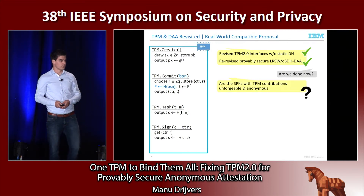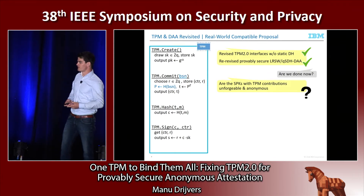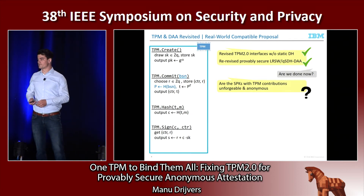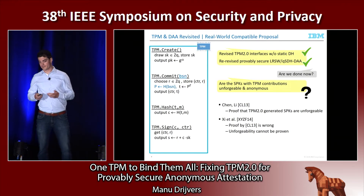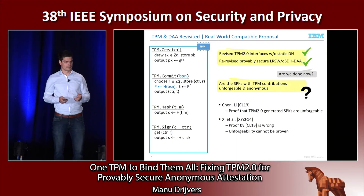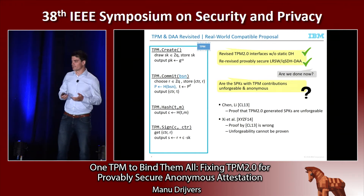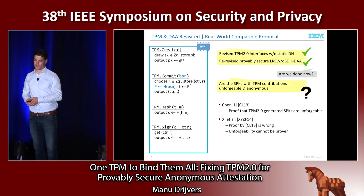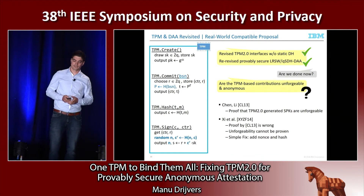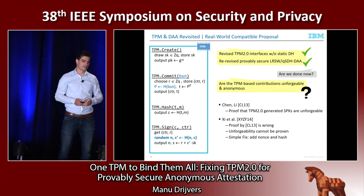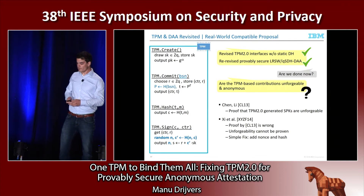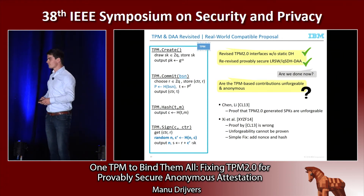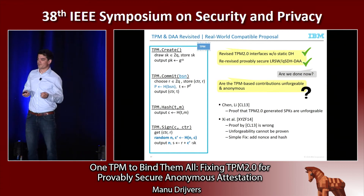Now we're wondering whether we're done — do we have unforgeability and anonymity? Turns out we don't. When these interfaces were announced, there was a proof that they would guarantee the unforgeability we want. But unfortunately there's a flaw in that proof, and this unforgeability cannot be proven and might in fact not hold. There is a proposed solution by adding a nonce, which would fix that problem. But now we weaken our anonymity — before, we did not rely on the TPM for anonymity, but now we actually do. So we have the unforgeability we wanted, but the anonymity went down.